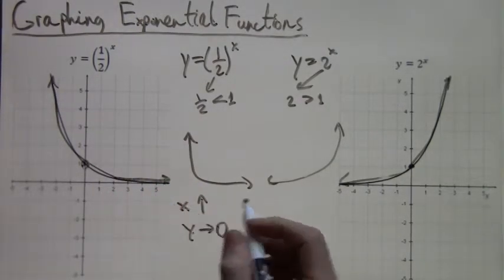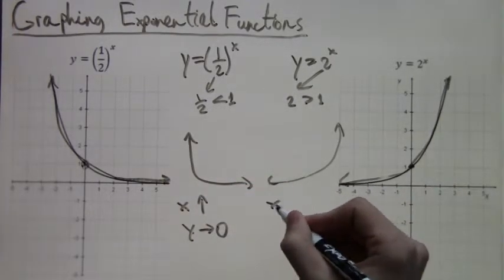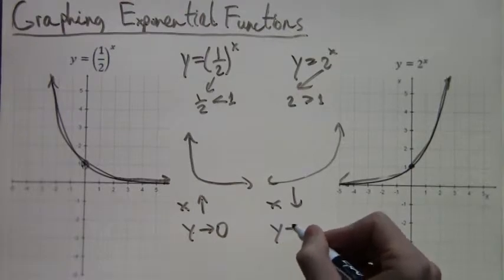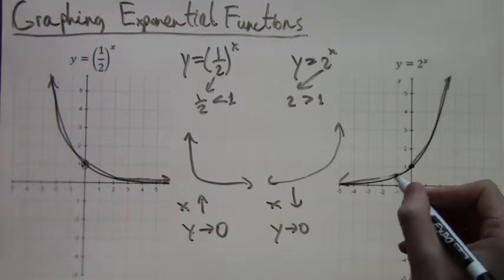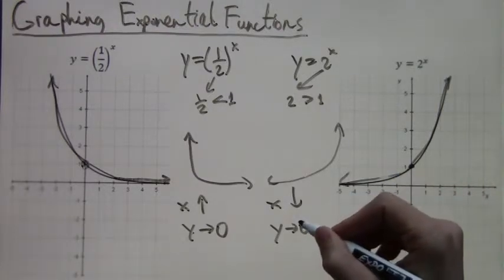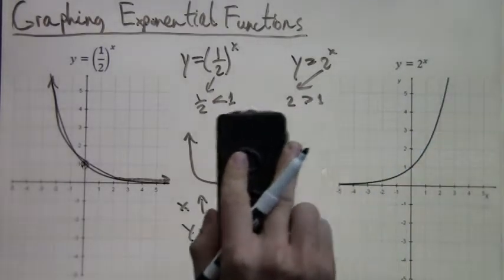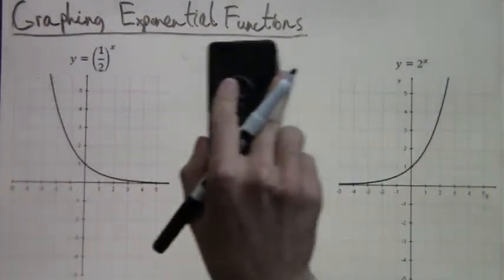On the other hand, when we have y equals two to the x, well first of all, when x gets larger, then of course it's going to get very large. You're just multiplying two very many times. But when x gets smaller, y will approach zero for the same reason as it did for one half to the x when x got larger.